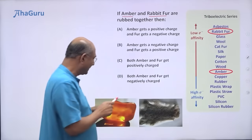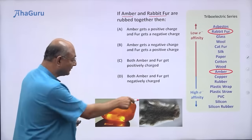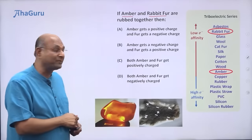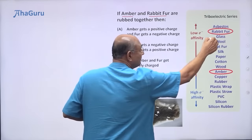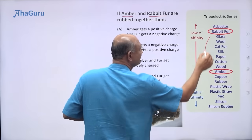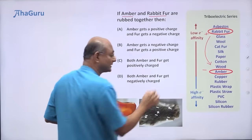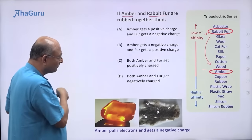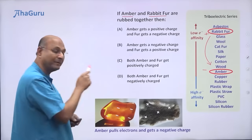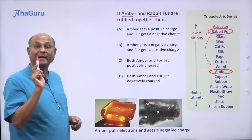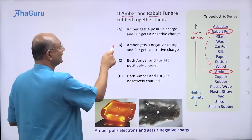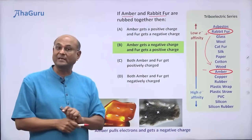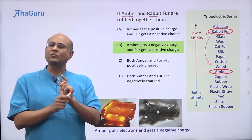Comparing rabbit fur and amber: rabbit fur has low electron affinity, so it is ready to give away electrons — it gets a positive charge. Amber, on the other hand, pulls electrons from the rabbit fur toward itself, so the amber gets negatively charged and the rabbit fur gets positively charged. The correct answer is option B: amber gets a negative charge and the fur gets a positive charge.